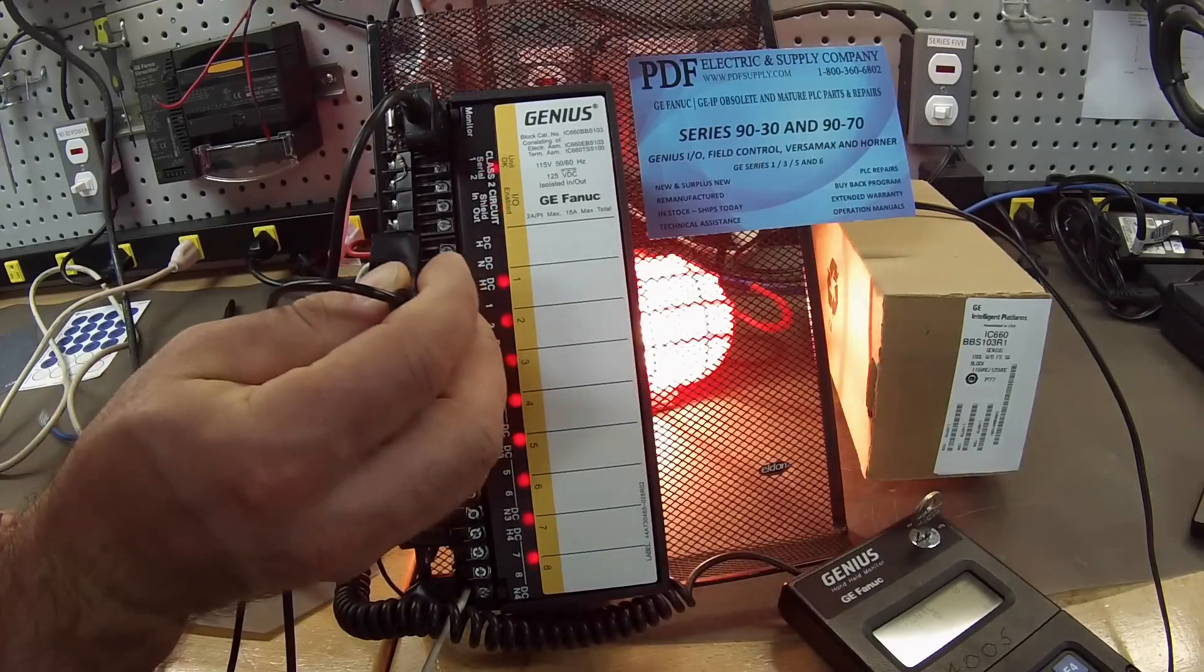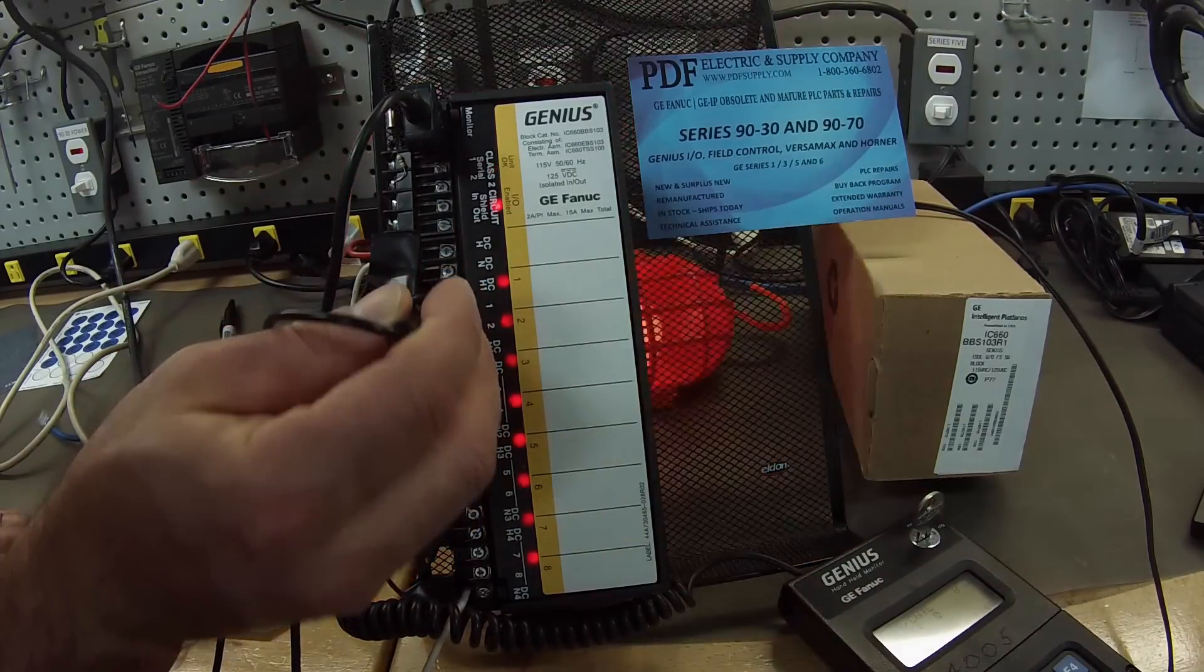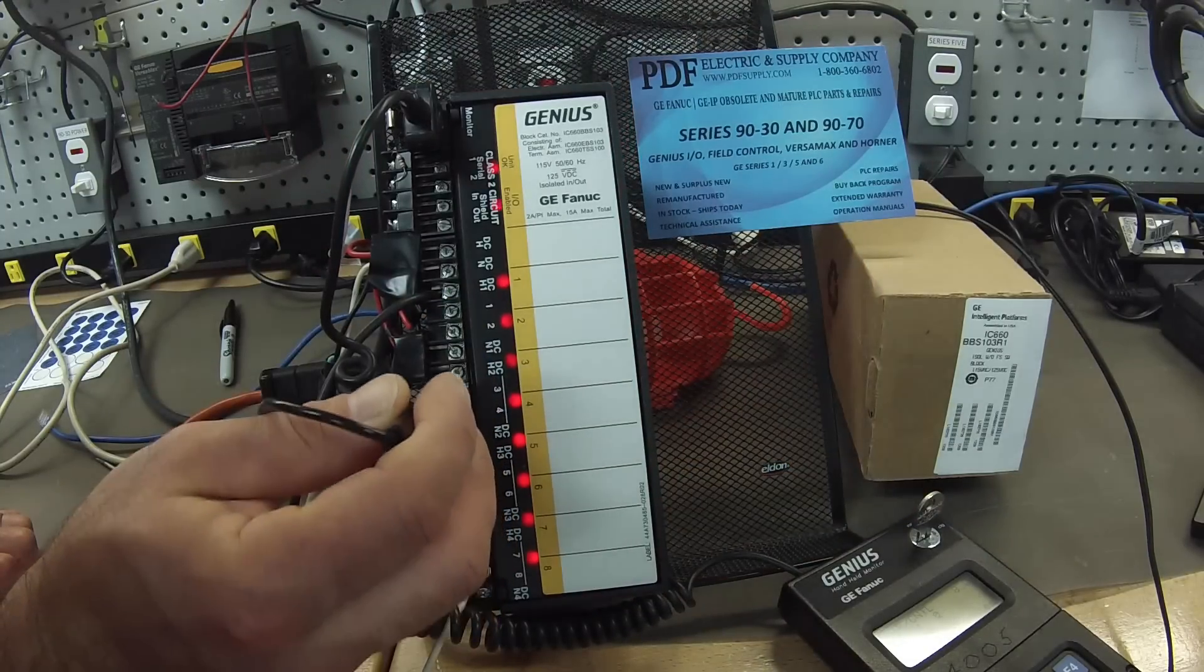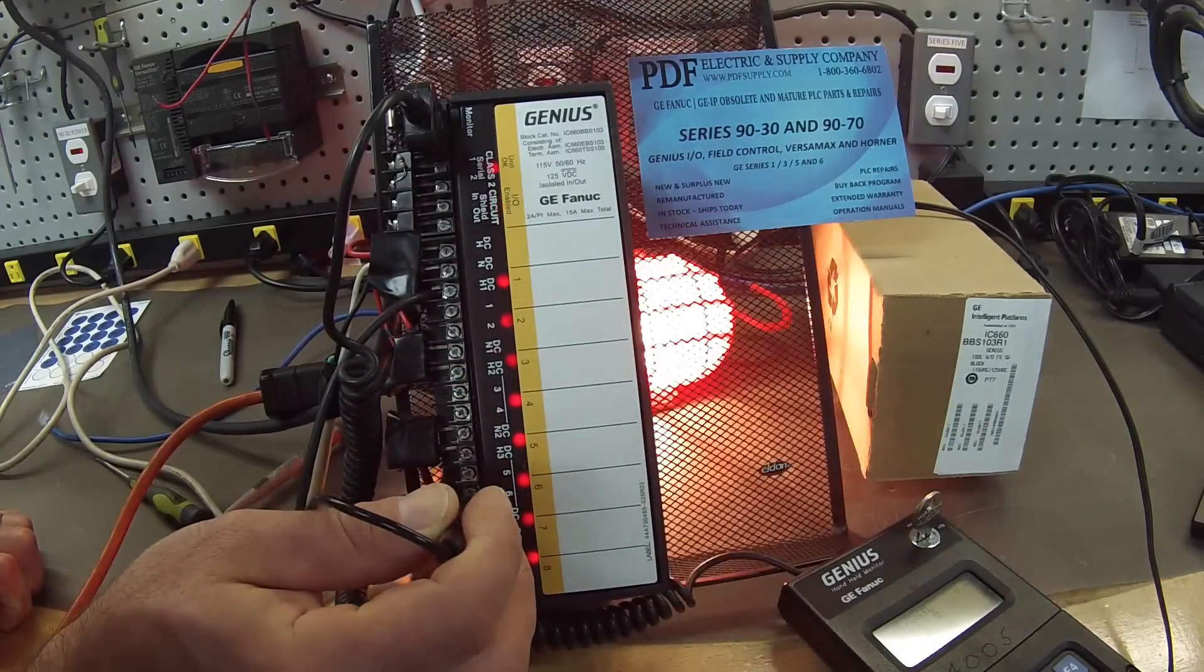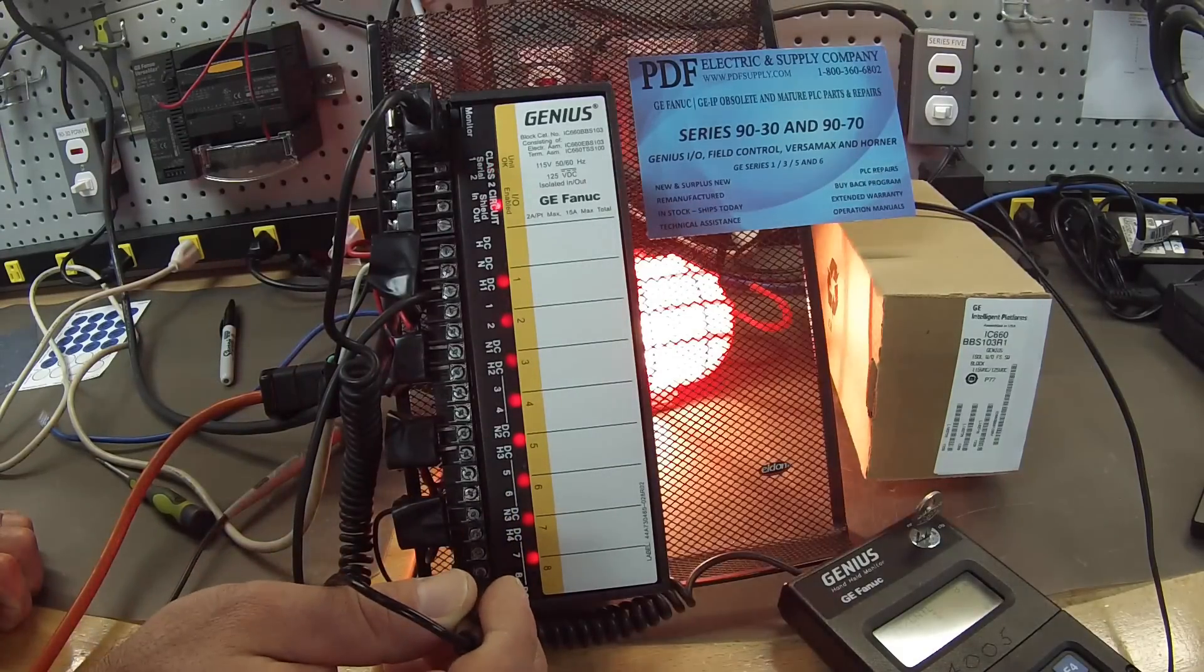So when I touch this to the 1 through 8, I should get the light coming on if the outputs are working. So 1, 2, 3, 4, 5, 6, 7, and 8. Okay?